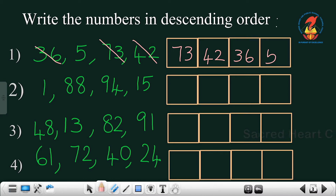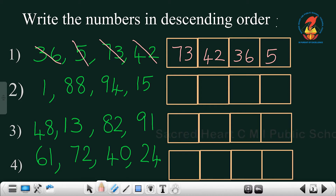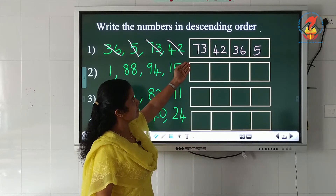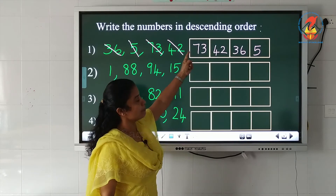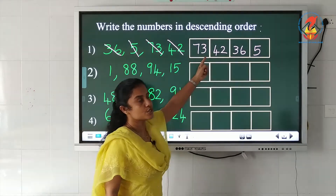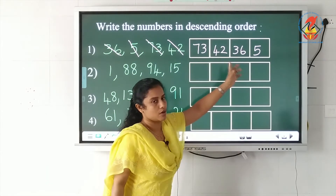The remaining number is 5, so 5 is the smallest. We write 5 and strike off the number. So look here children — we have arranged the numbers from biggest to the smallest.